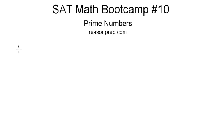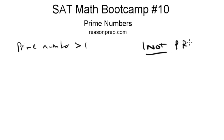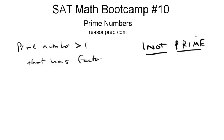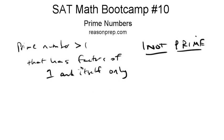So what is a prime number? A prime number is first greater than 1 — so 1 is not prime. Important to remember that. A prime number is a number greater than 1 that has factors of 1 and itself only. So its only factors are 1 and itself.